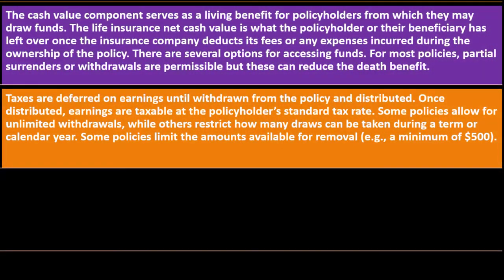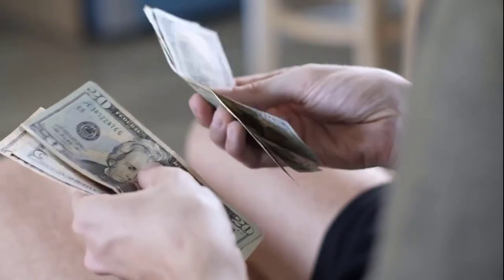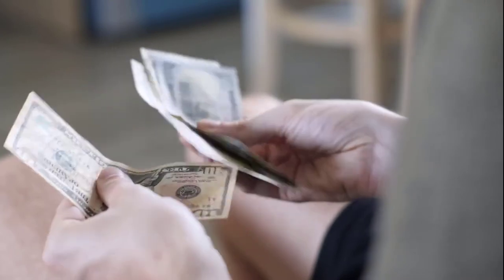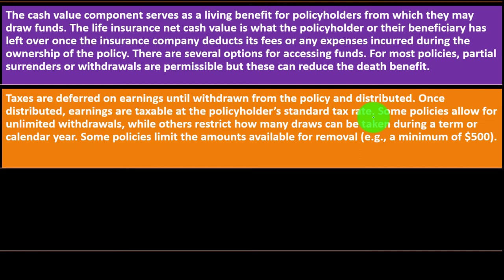Once distributed, earnings are taxable at the policyholder's standard tax rate — similar to an IRA or 401k, where earnings are tax-deferred and taxed upon withdrawal. This is a form of deferral, and when you take the money out, there may be tax consequences at that point. Some policies allow unlimited withdrawals while others restrict how many draws can be taken during a term or calendar year.